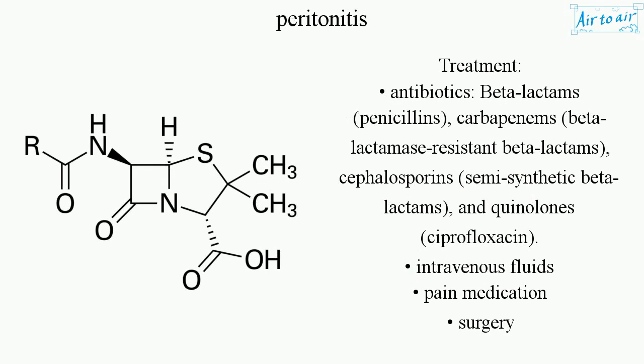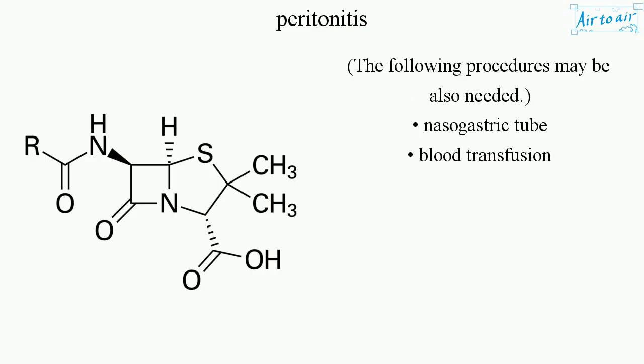Treatment includes antibiotics such as beta-lactams, penicillins, carbapenems, beta-lactamase resistant beta-lactams, cephalosporins, semi-synthetic beta-lactams, and quinolones such as ciprofloxacin. Additional treatments include intravenous fluids, pain medication, and surgery. Procedures such as nasogastric tube placement and blood transfusion may also be needed.